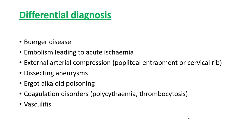The differential diagnosis of peripheral arterial disease includes Buerger's disease, emboli leading to acute ischemia, external arterial compression such as popliteal entrapment or cervical rib, dissecting aneurysm, ergot alkaloid poisoning, coagulation disorders like polycythemia and thrombocytosis, and various medium or large vessel vasculitides.